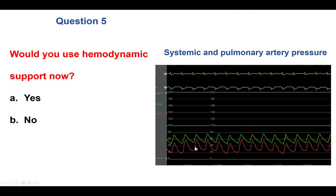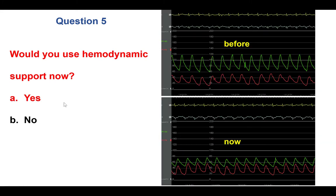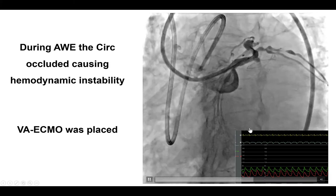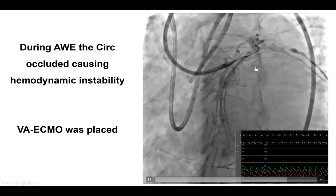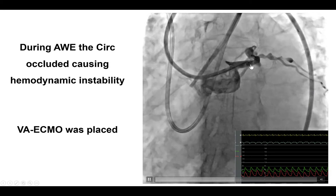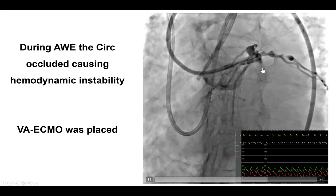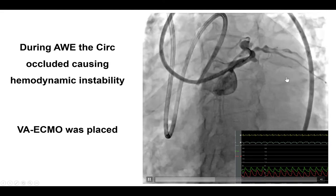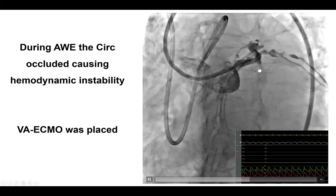Wire escalation was done with the Filter XTA and then the hemodynamics changed. There was significant hypotension with systolic pressure in the 70s and an increase in pulmonary artery pressure. Hemodynamic support was clearly needed. What happened was an occlusion of the first obtuse marginal branch — there was no safety wire there, and during attempts to wire, a dissection occurred that compromised flow, leading to hemodynamic decompensation given the patient's limited reserve.